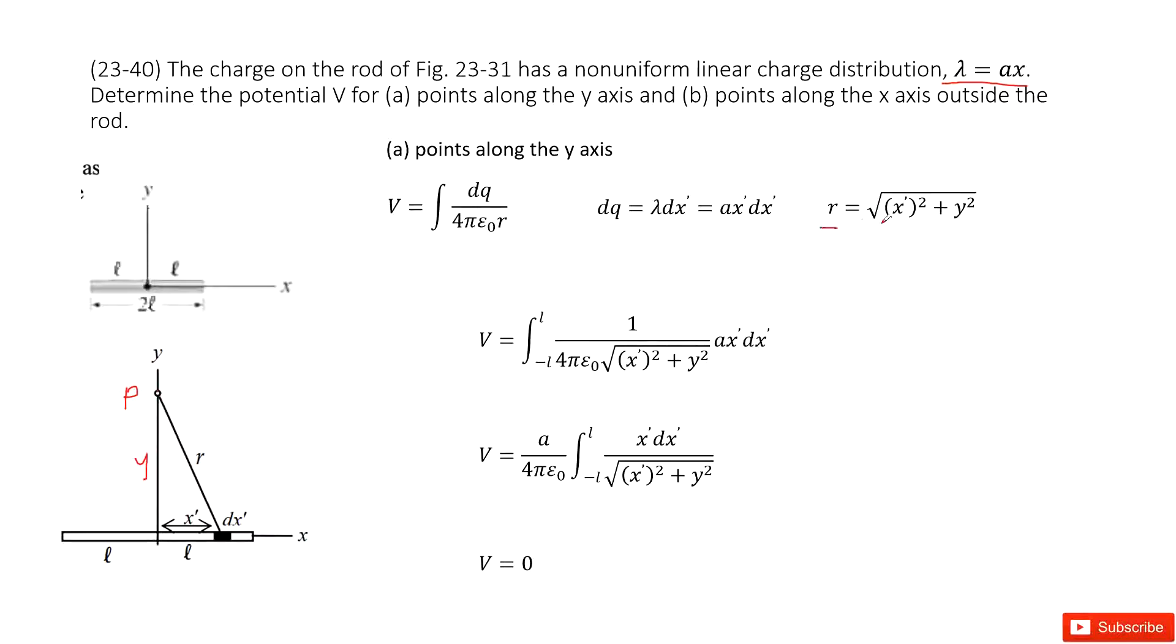So r can be written as a function: square root of x′ squared plus y squared. Now, can you find the charge carried by this small fraction? Yes, we can use the charge density times dx′. dx′ is the length for this small fraction.